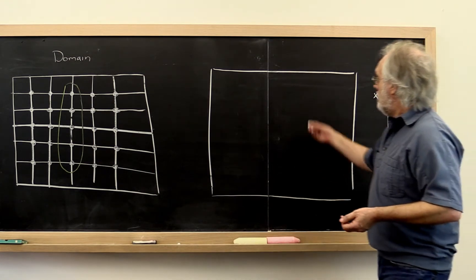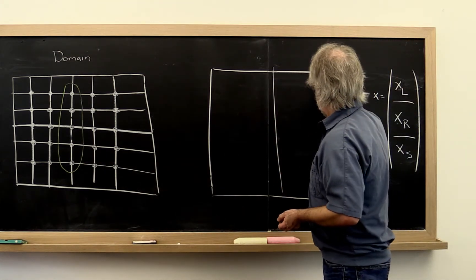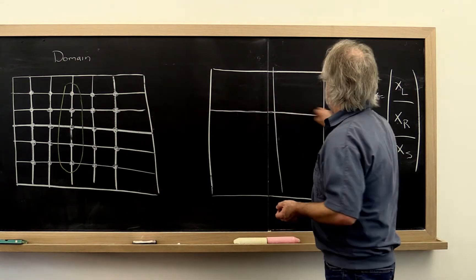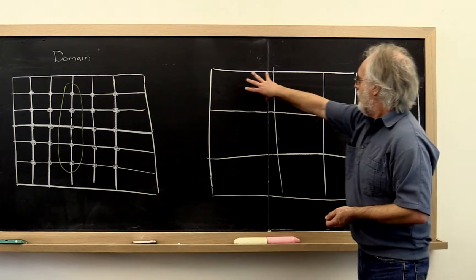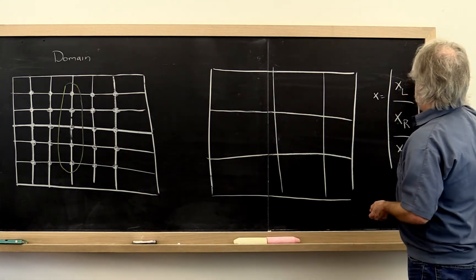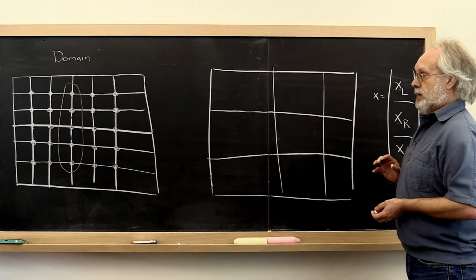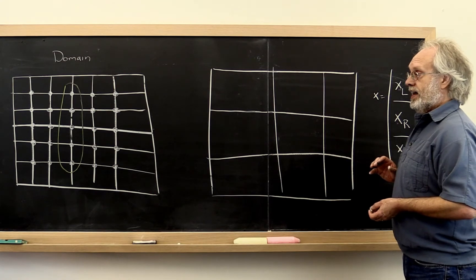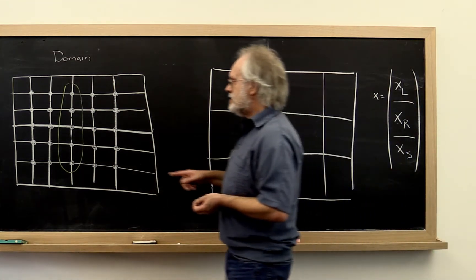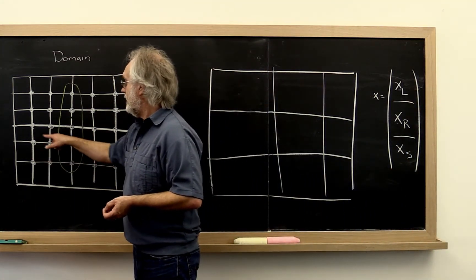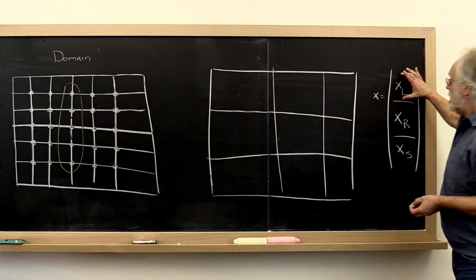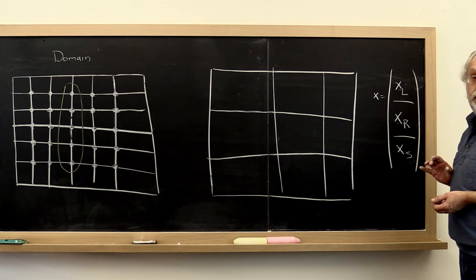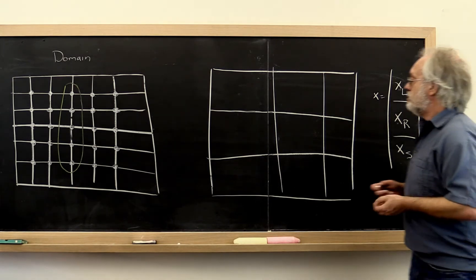Now the matrix similarly can be partitioned into blocks. Now remember, we're doing this times that to equal the corresponding sub vector of the right-hand side. And notice that that sub vector on the right-hand side is ordered similarly to the points that are part of this sub matrix right here.